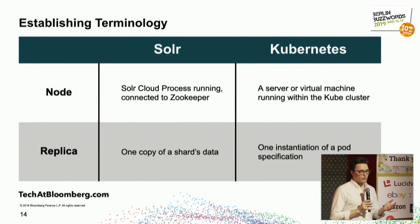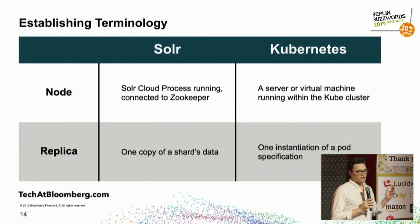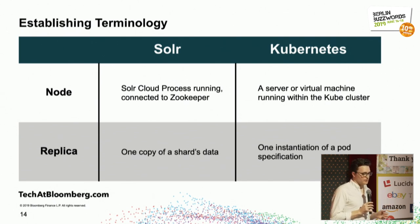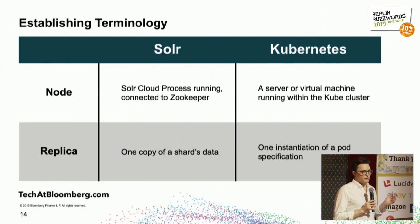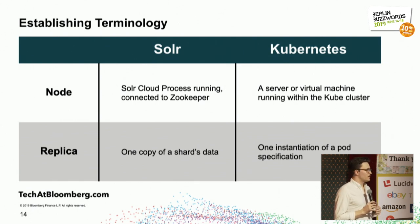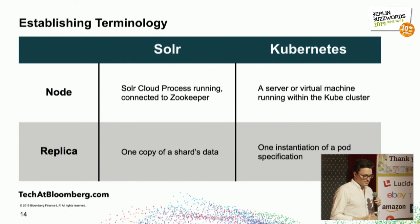'Replica' is a little more similar between the two. In Solr, it's a copy of one shard's data that houses the Solr core. But in Kubernetes, it means an instantiation of a pod specification. We'll get into what that means in a bit.